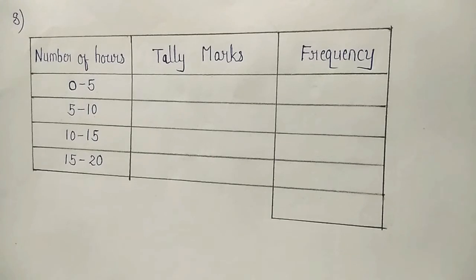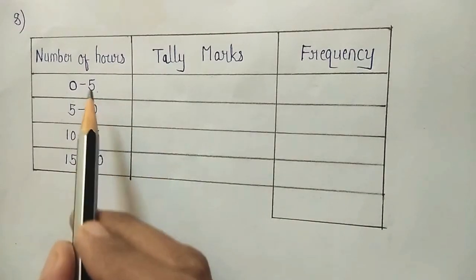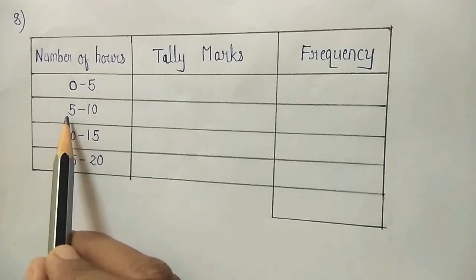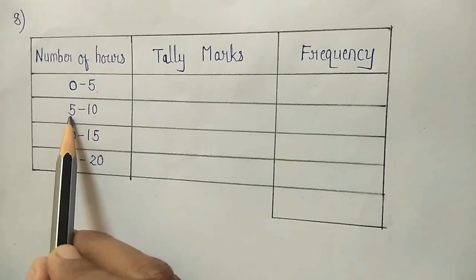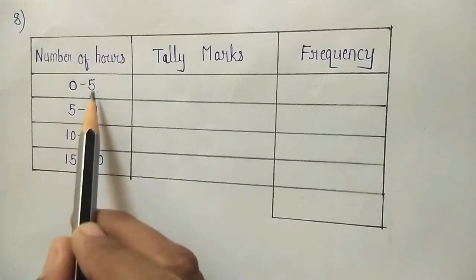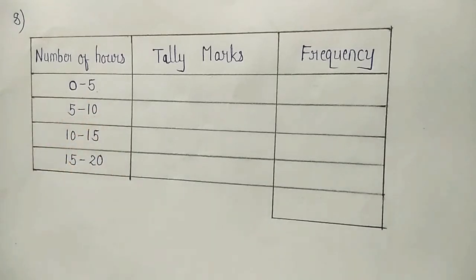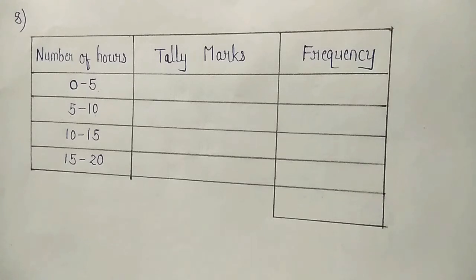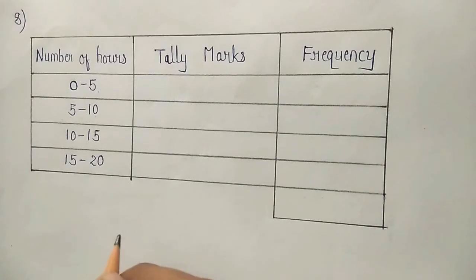What is a grouped frequency distribution table? Here you can see the upper limit of one class and the lower limit of the next class should be the same — that is what makes it a grouped frequency distribution table. Now let us start keeping the telemarks. When you put telemarks, cancel them so that you do not make a mistake.